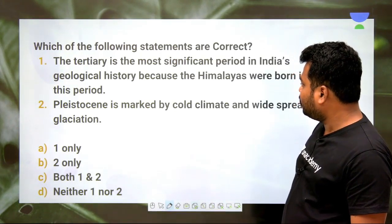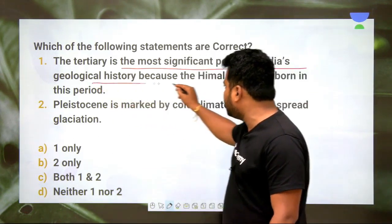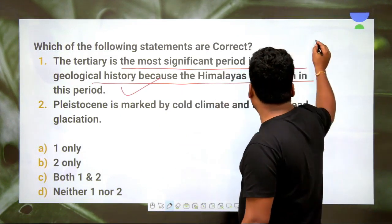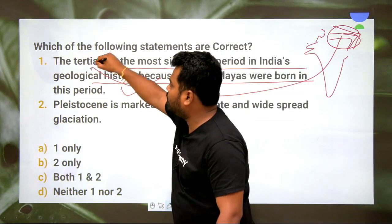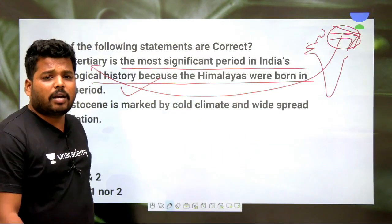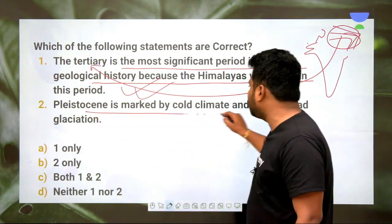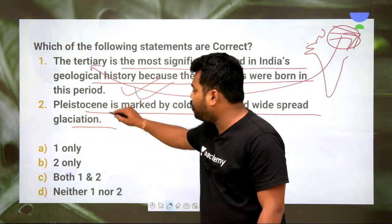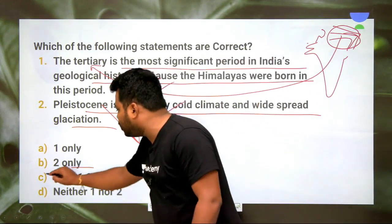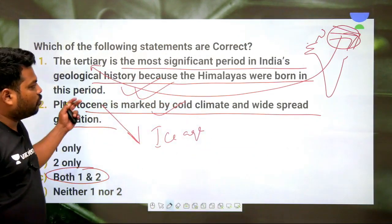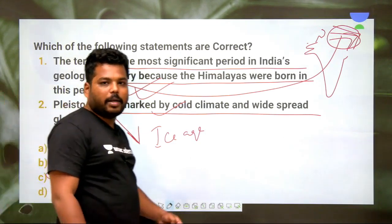The next question: the Tertiary period is the most significant period of India's geological history because the Himalayas were formed during this period. The Himalayas are located in the northern region and were formed during the Tertiary phase — this statement is true. The Pleistocene period is marked by cold climate and widespread glaciation — Pleistocene is essentially the Ice Age — also absolutely true. Both statements are correct, so mark them.